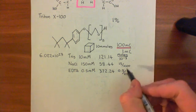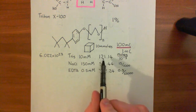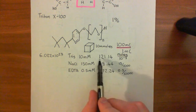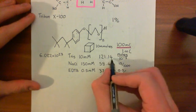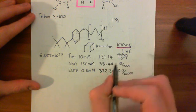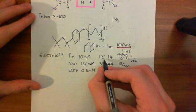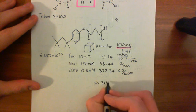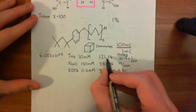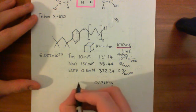We can now work out what mass to add, because we know the number of grams corresponding to 1 mole. For Tris, we multiply 121.14 by 10 to the power of negative 3 — effectively dividing by 1,000. That gives us 0.12114 grams of Tris.